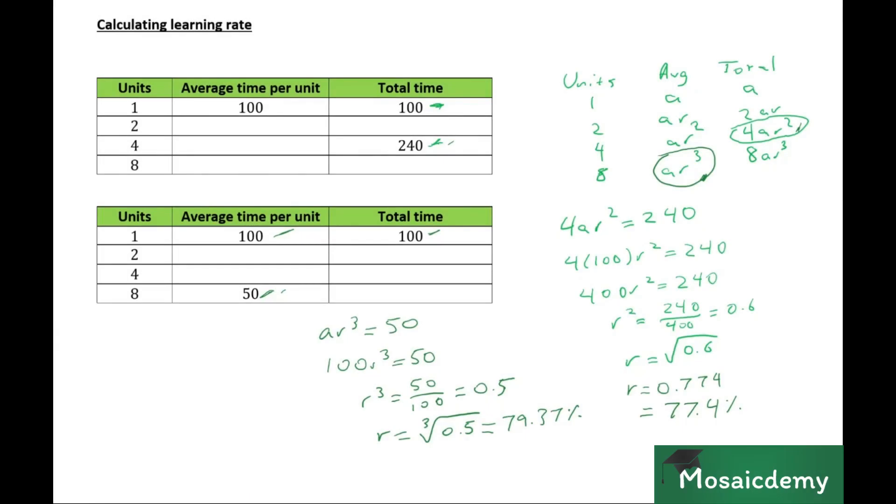When it comes to the ACCA F5 exam, one common mistake that students make in this calculation is they mix up the average time or the total time. So for example, if the total time is 240 for 4 units, they'll accidentally say AR squared is equal to 240. Or if the average time for 8 units is 50, they'll accidentally take the 8AR cubed value against 50.